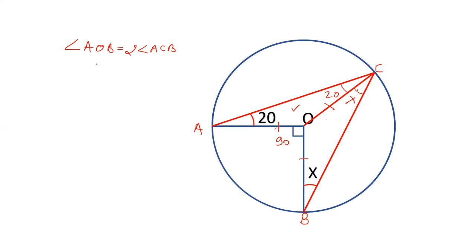Now, as I told you, angle AOB is twice angle ACB. AOB is 90 degrees. Therefore, angle ACB will be 90 by 2, which is 45 degrees. But angle ACB is equal to 20 plus x. So 20 plus x is 45, and x is equal to 25. The value of x is 25.